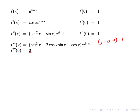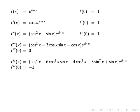Now if we calculate the next derivative again using the product and chain rule, we get cos to the 4 x minus 6 cos squared x sin x minus 4 cos squared x plus 3 sin squared x plus sin x times e to the sine x. And if we evaluate this at 0 all the sine terms will give us 0, so we are left with cos to the 4 of 0 so 1 minus 4 times 1 giving us minus 3.